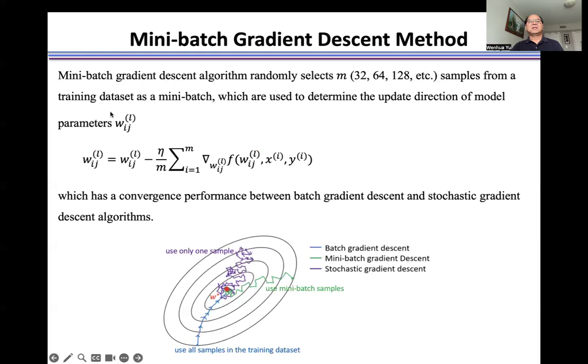Mini-batch gradient descent algorithm randomly selects m samples from the training dataset as a mini-batch, which are used to determine the update direction of model parameters w. We use m gradients to update the model parameter w, which has convergence performance between batch gradient descent and stochastic gradient descent algorithms.